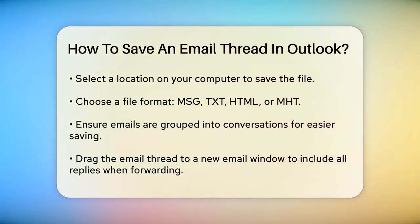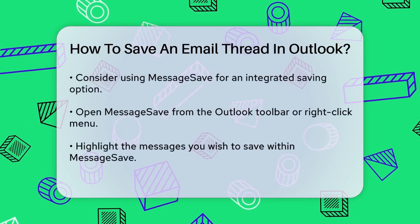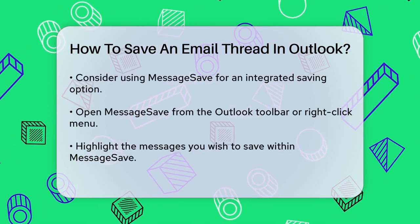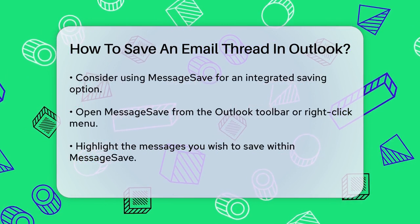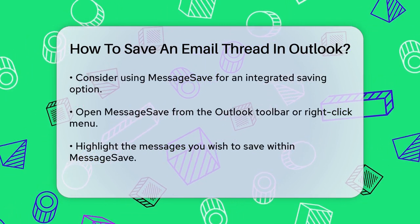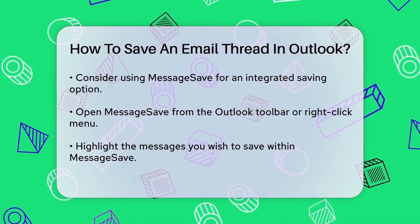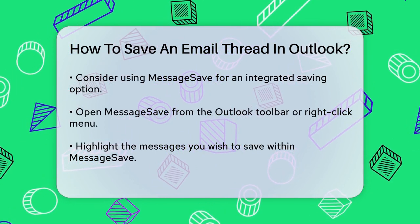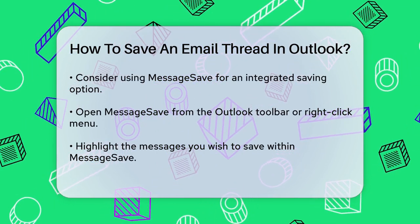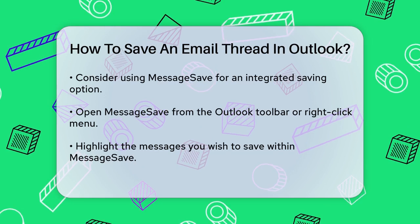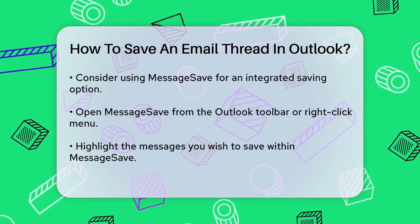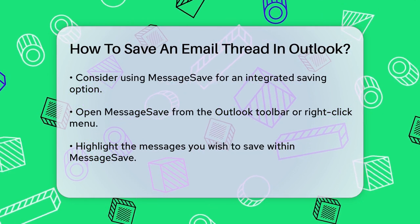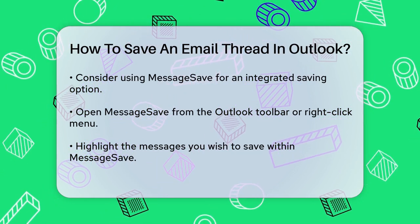Another option is to use a tool like MessageSave, which integrates with Outlook. Open MessageSave by clicking the Save Messages button on the Outlook toolbar or right-click menu. Select the messages you want to save by highlighting them. Click Browse to choose the destination folder. You can also specify additional options by clicking More. Finally, click Save Now.